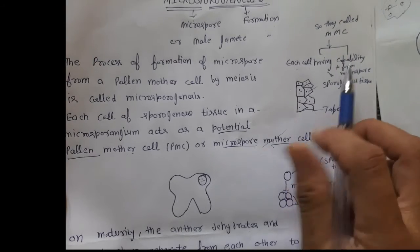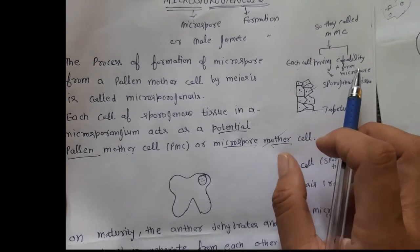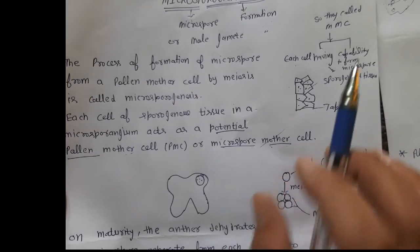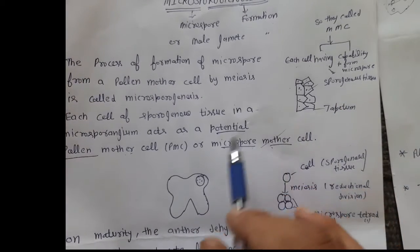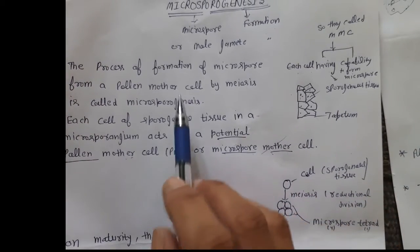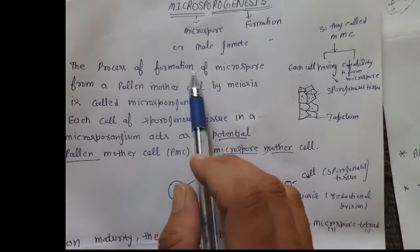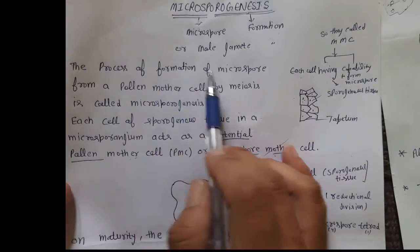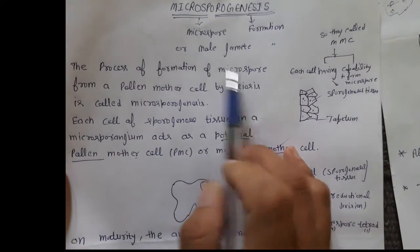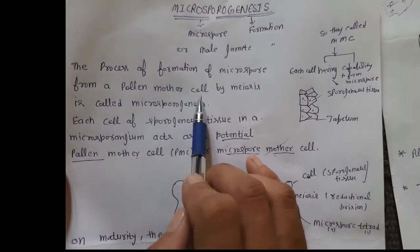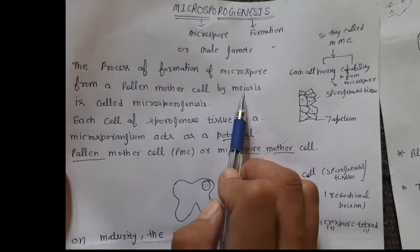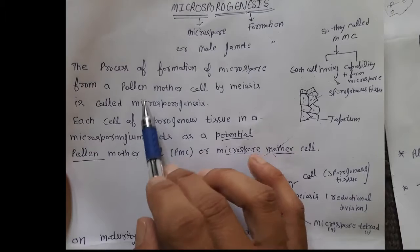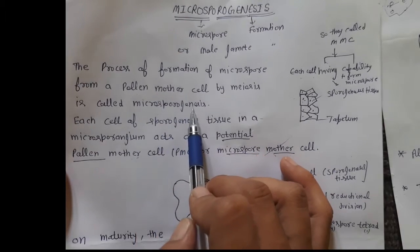So we refer to these cells as MMC — microspore mother cell — or PMC — pollen mother cell. Microsporogenesis is the process of formation of microspores from a pollen mother cell by meiosis. This process is called microsporogenesis.